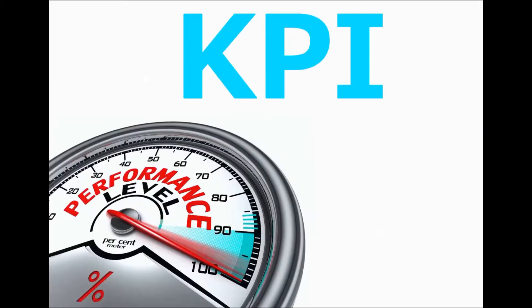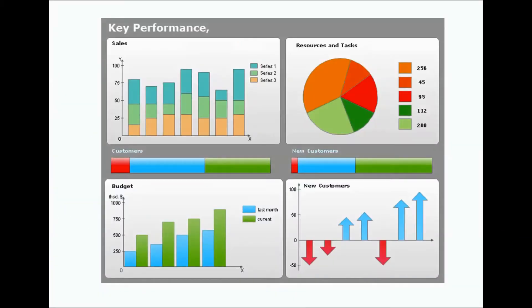Hi guys. A KPI, or Key Performance Indicator, is a measurable value that demonstrates how effectively a company is achieving its key business objectives. Organizations use KPIs to evaluate their success at reaching certain targets or of a particular activity. Often success is simply the repeated achievement of some levels of operational goals — for example, zero defects or 10 out of 10 in customer satisfaction.